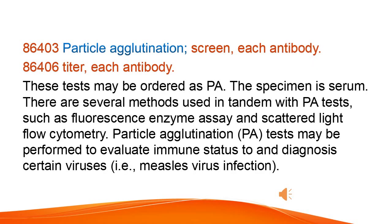Particle agglutination, screen, each antibody. Titer, each antibody. These tests may be ordered as PAW. The specimen is serum. There are several methods used in tandem with PAW tests, such as fluorescence enzyme assay and scattered light flow cytometry. Particle agglutination, PAW, tests may be performed to evaluate immune status to and diagnose certain viruses, i.e., measles virus infection.